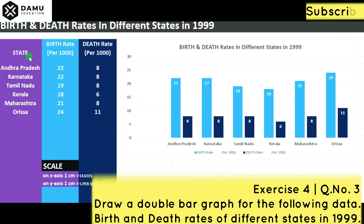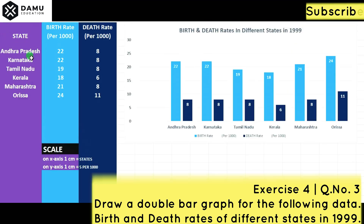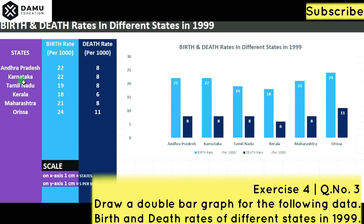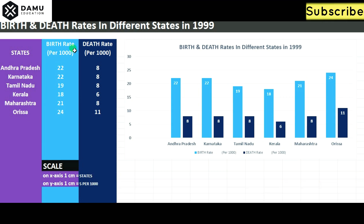The given states are Karnataka, Tamil Nadu, Kerala, and Maharashtra. The birth rate and death rate are given per thousand people. Birth rates: Andhra Pradesh 22, Karnataka 22, Tamil Nadu 19, Kerala 18, Maharashtra 21. Death rates per thousand: Andhra Pradesh 8, Karnataka 8, Tamil Nadu 8, Kerala 6, Maharashtra 8.